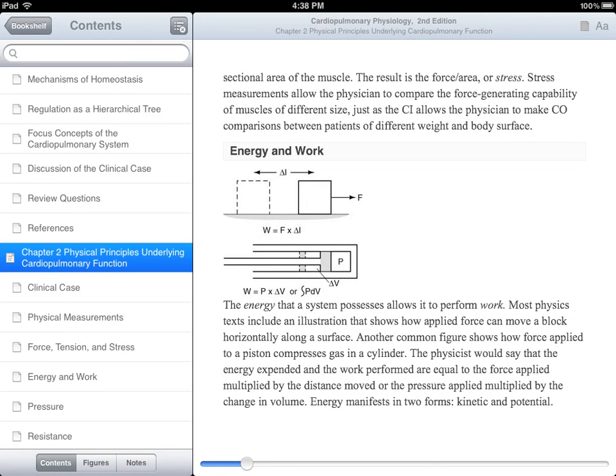Let's start with making a highlight and then discuss all the highlighting features. To make a highlight, locate the passage that you would like to highlight. Place your finger on a word and hold it until the magnifying glass appears. Then remove your finger.